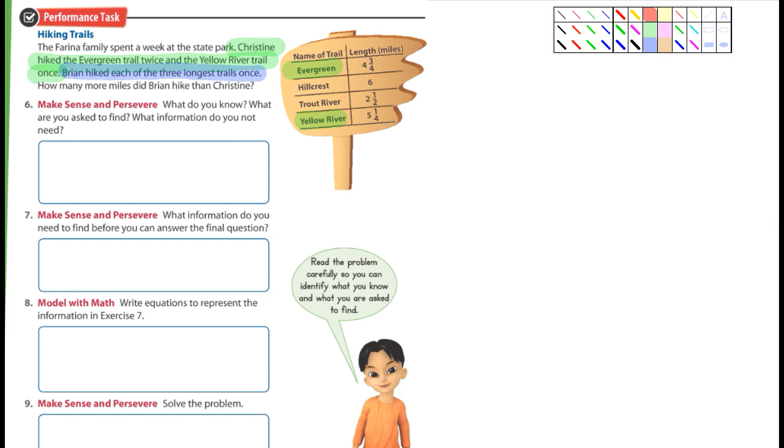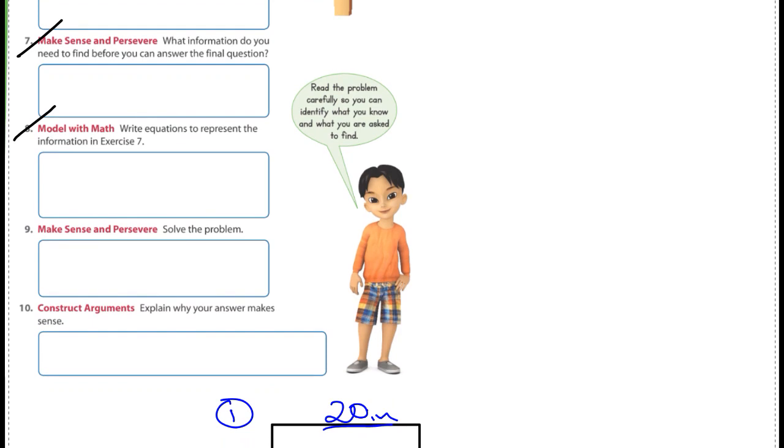And the question you have to answer is, how many more miles did Brian hike than Christine? That's the question you have to answer. I'm not worried about six, I'm not worried about seven, I'm not worried about eight. Nine does say to solve the problem.